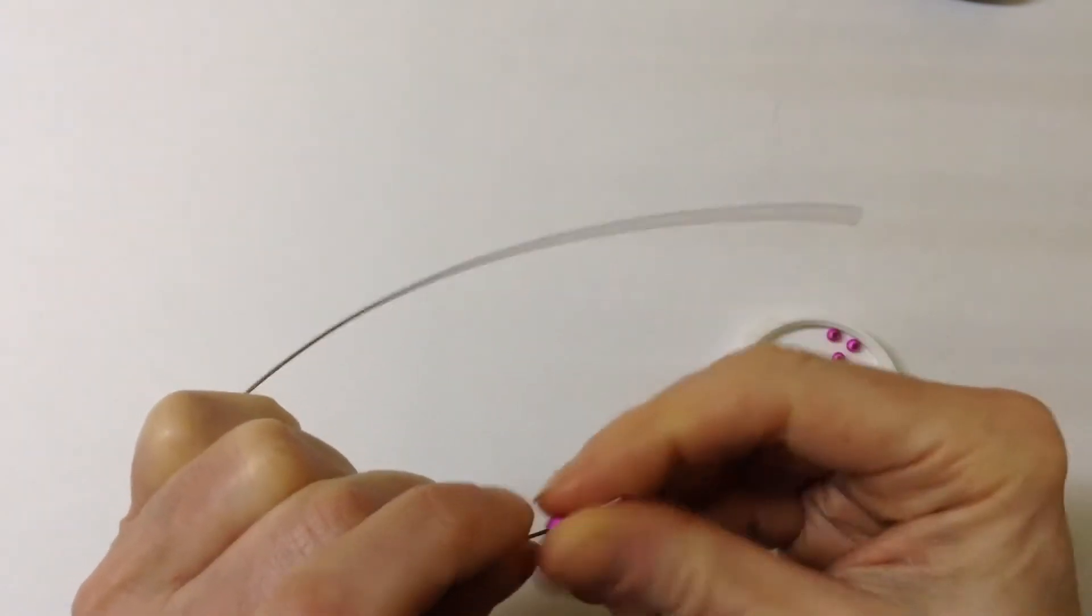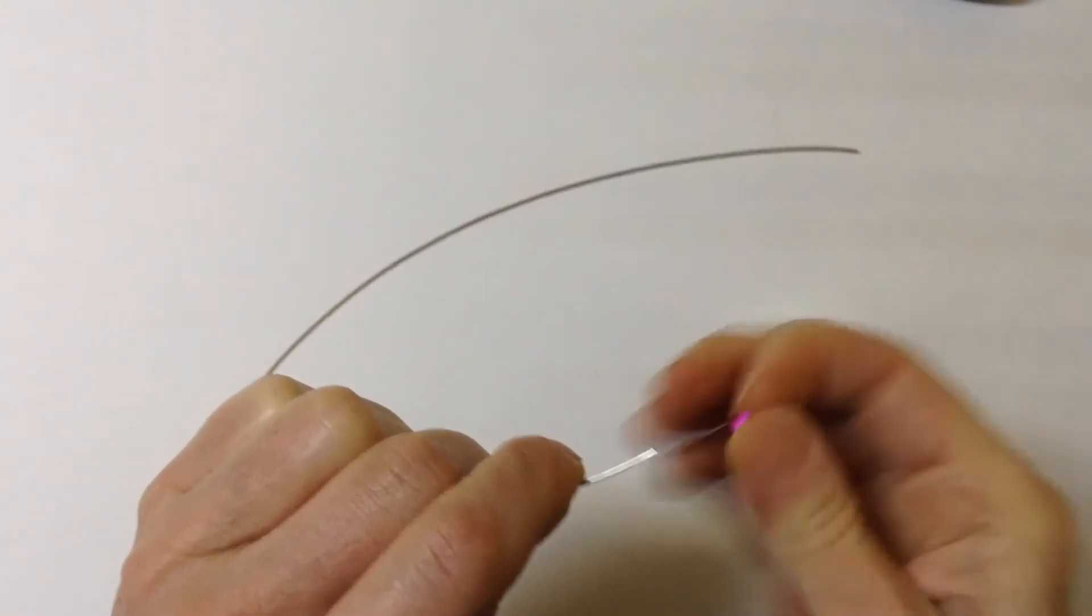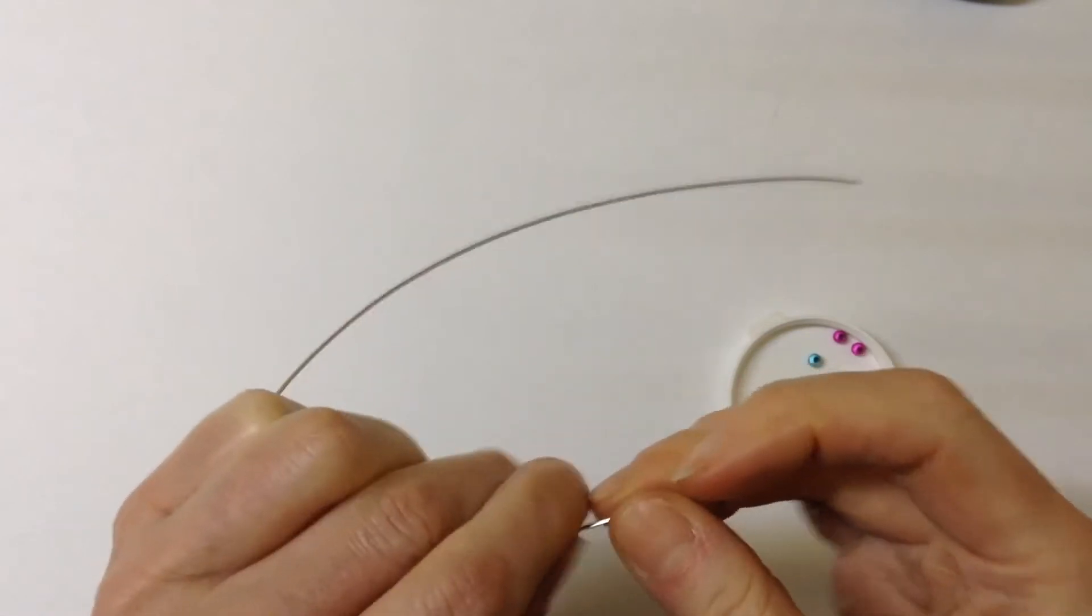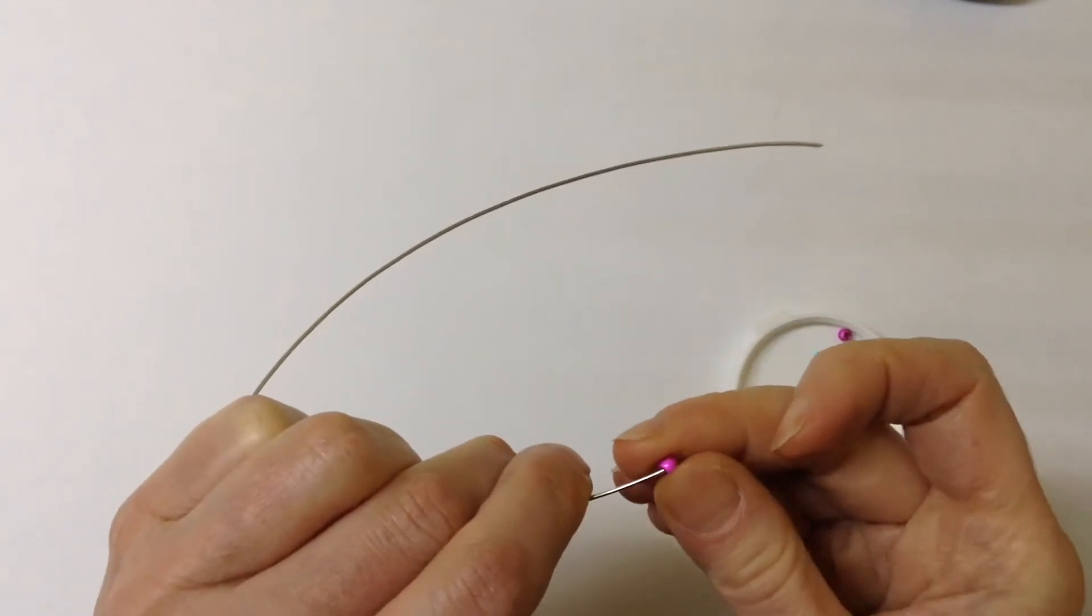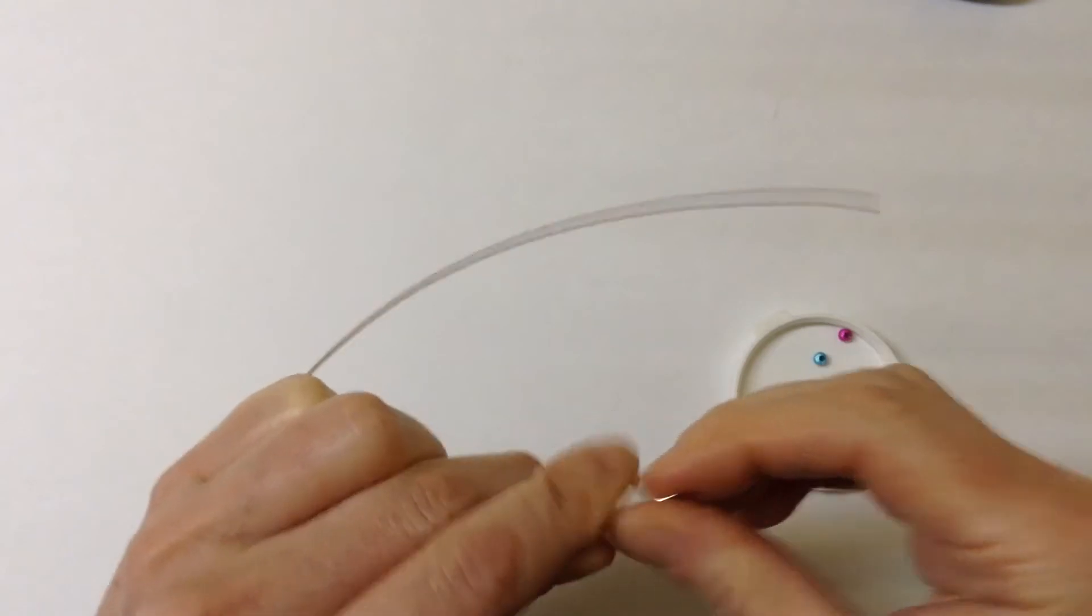These ones are miracle beads which work well because they have a good size hole in them so they'll actually fit on the 20 gauge wire which is perfect.